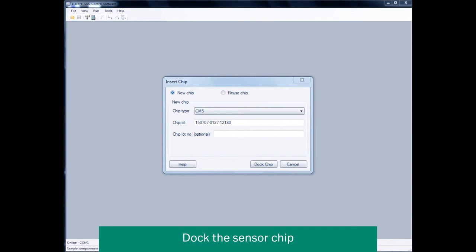Log chip information into the insert chip dialog box. Select chip type from the drop down menu. Define the chip ID and chip lot number which is located on the chip and also on the chip envelope packaging.